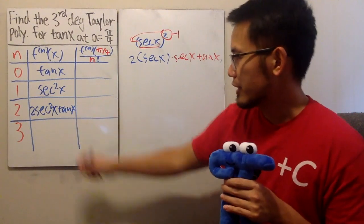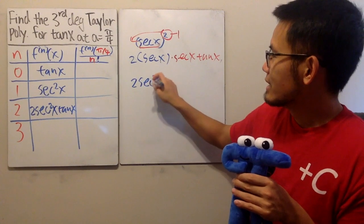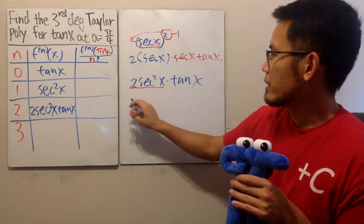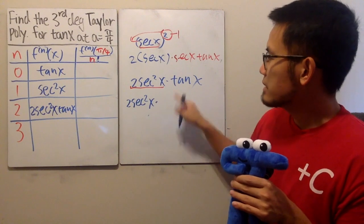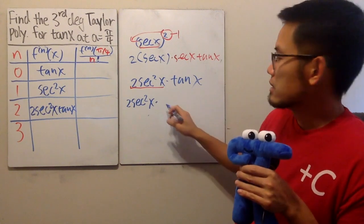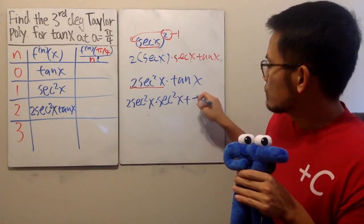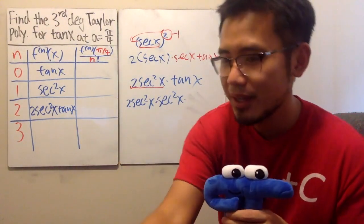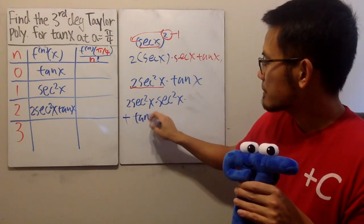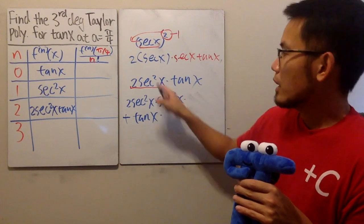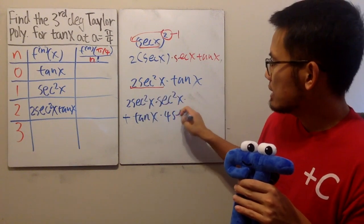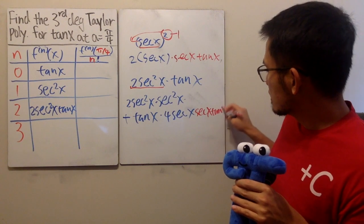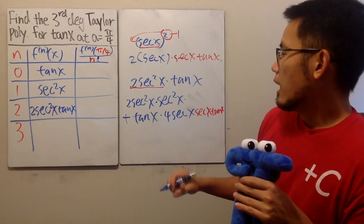Lastly, we have to differentiate that. So let me write down 2 secant square x times tangent x. Product rule in action. I will keep the first function, which is 2 secant square x times the derivative of the second. Derivative of tangent x is secant square x. Then we add the second function, which is tangent x, and we multiply by the derivative of the first. Bring the 2 to the front, we get 4, and then secant x. But again, multiply by the derivative of secant x, which is secant x tangent x, which is very similar to this.